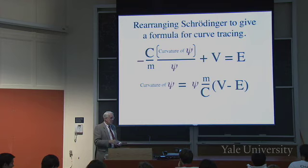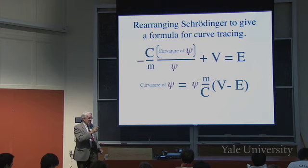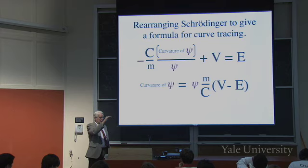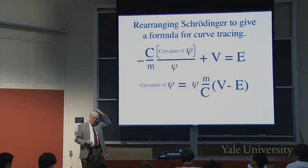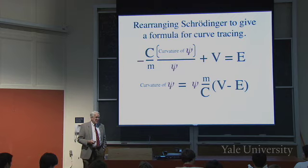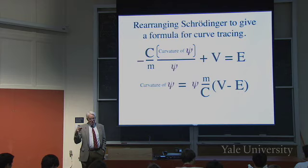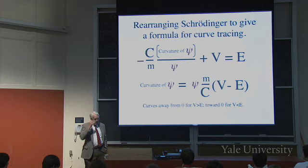How do we start with the correct slope? We'll get to that. But if you had the initial slope and height, you use the formula for curvature to trace out the curve. It would be tedious to do by hand — but that's what the program 'Erwin meets Goldilocks' does: it starts the curve and draws it out given everything else in the equation.